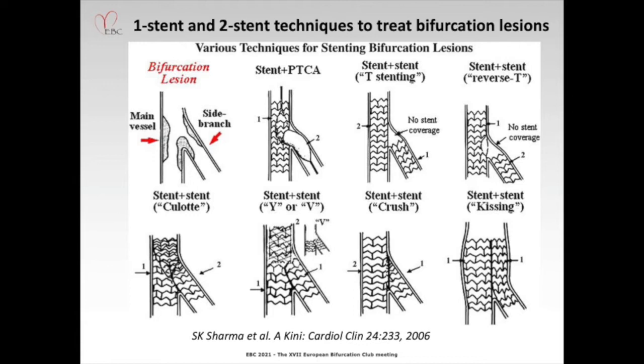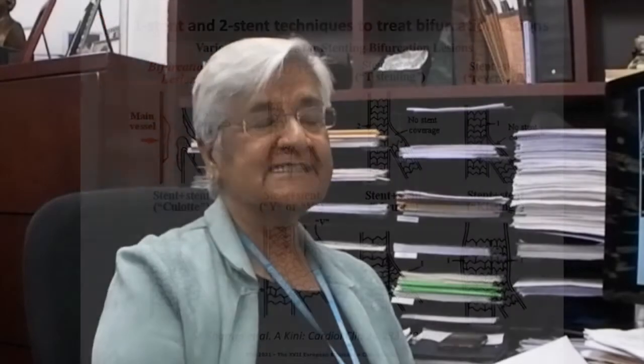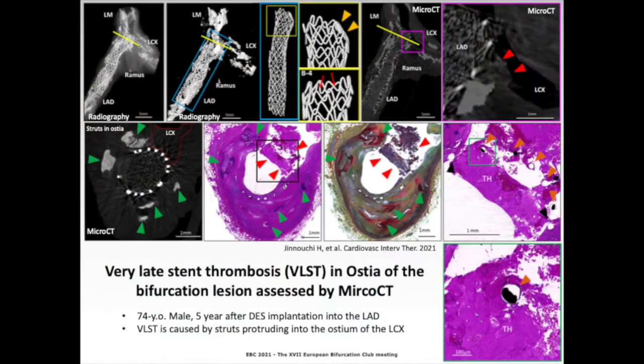I'm going to concentrate on what happens when we put in a stent. Here is a bifurcation lesion we recently reported showing very late stent thrombosis in an osteobifurcation lesion assessed by microCT. A 74-year-old man, five years after drug-eluting stent implantation into the LAD, had very late stent thrombosis caused by struts protruding into the ostium of the left circumflex that remained uncovered.